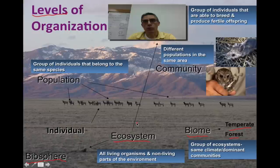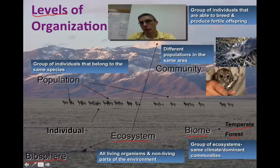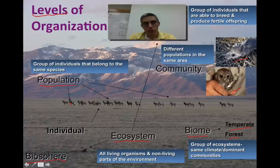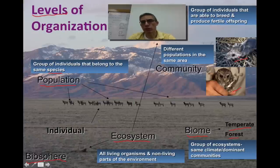Below the ecosystem you find something called a community — the different populations in that particular ecosystem. For example, the mouse and the small owl shown here are both important parts of that community — different populations in one particular area. Underneath community, you get more specific and talk about populations. All of these caribou or elk represent a good example of a population — a group of individuals that belong to the same species. The mice would be considered a population, and the owls would be considered a population. All three of those together would be considered their community.